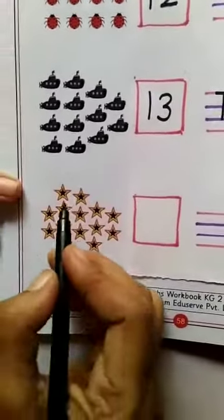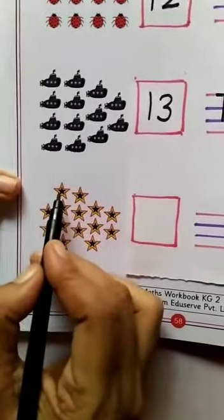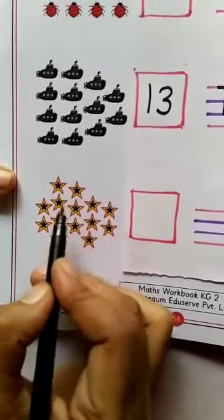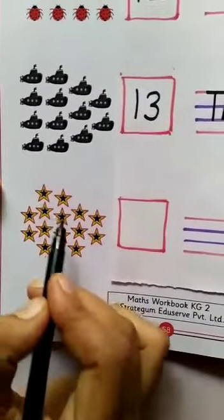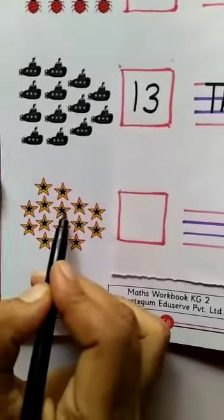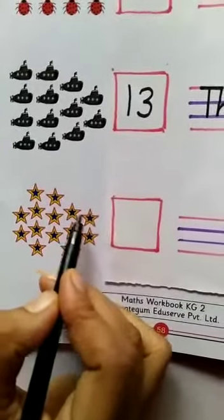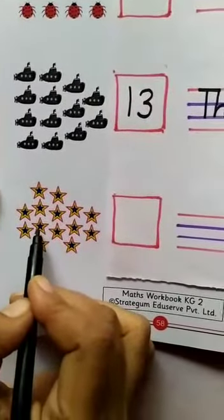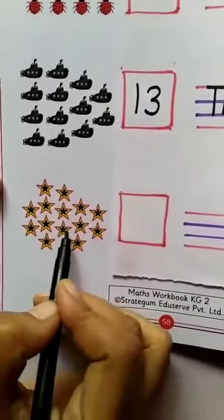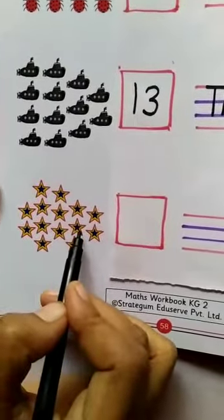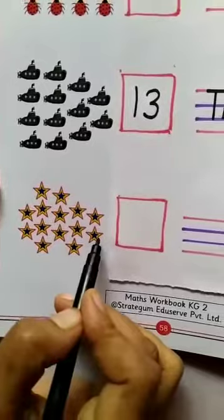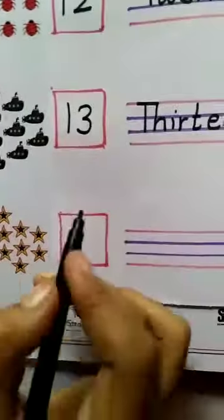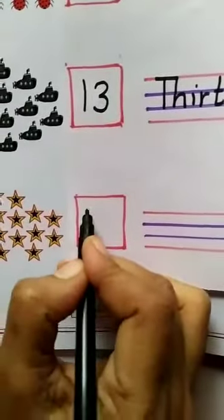Now we will count the stars. 1, 2, 3, 4, 5, 6, 7, 8, 9, 10, 11, 12, 13, 14. 14 stars.